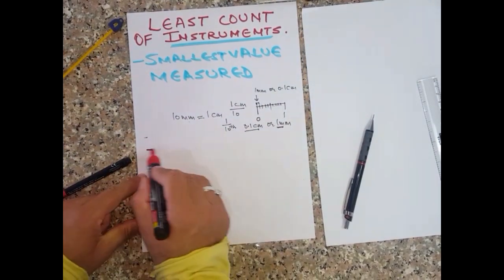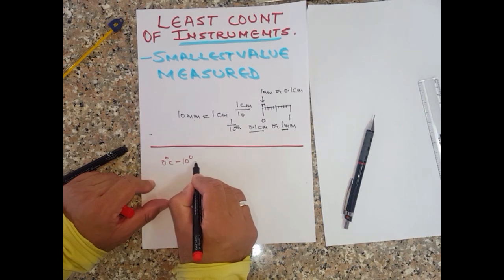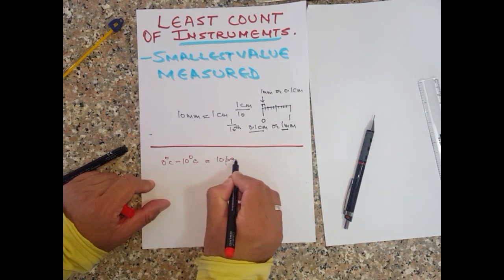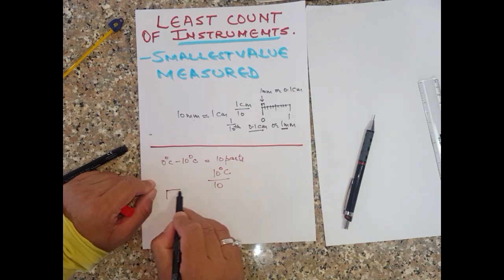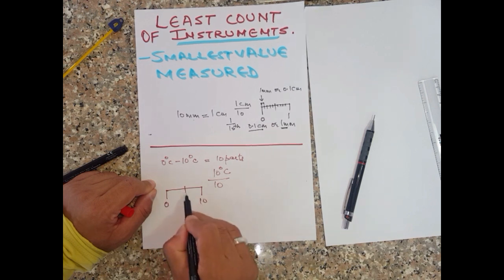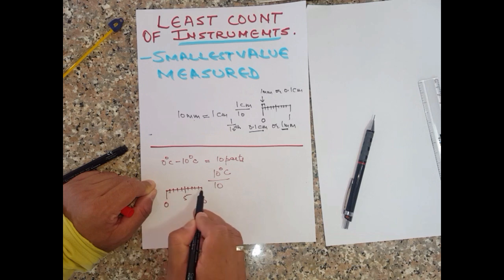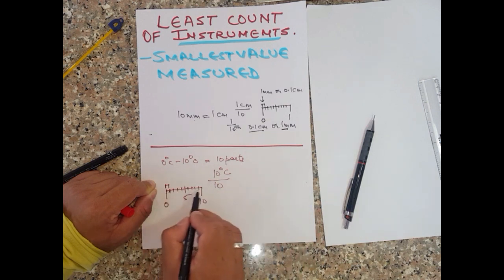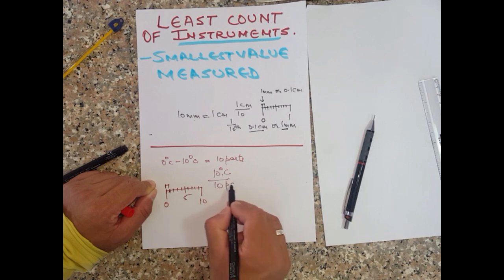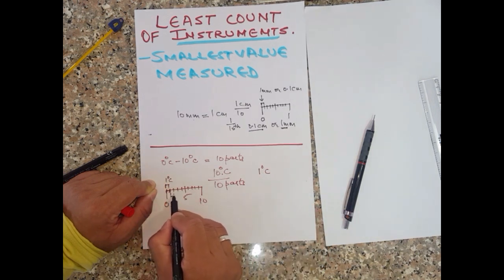Let's calculate for the thermometer. From 0 degrees Celsius to 10 degrees Celsius there are 10 divisions. So this is 0, this is 10, and we have 1, 2, 3, 4, 5, 6, 7, 8, 9, and 10 divisions. The temperature from the first graduation to the second graduation is the least count. Since 10 degrees is divided into 10 parts, each part is 10 divided by 10, which equals 1 degree Celsius.